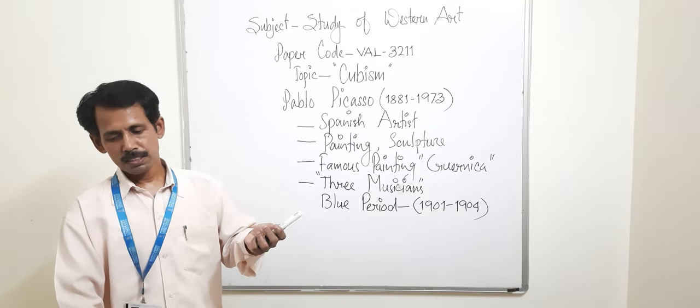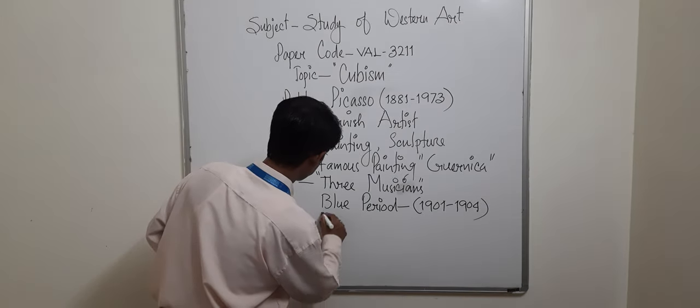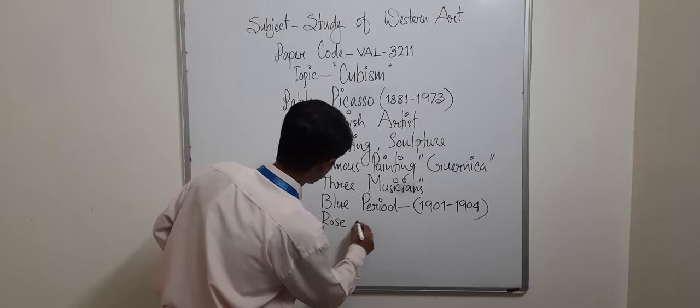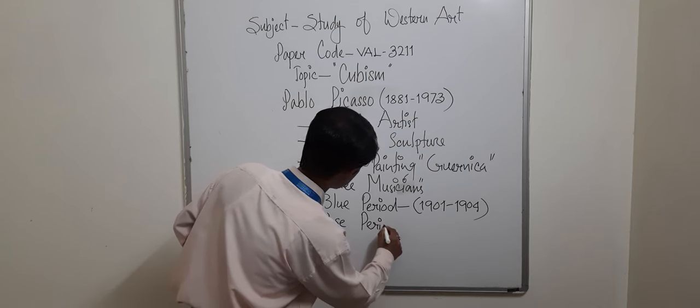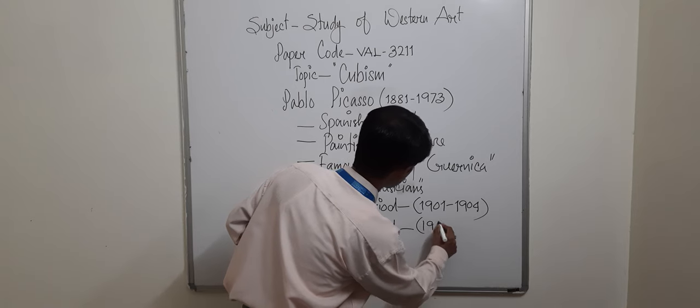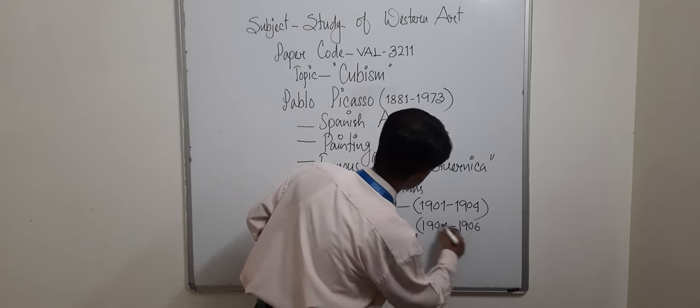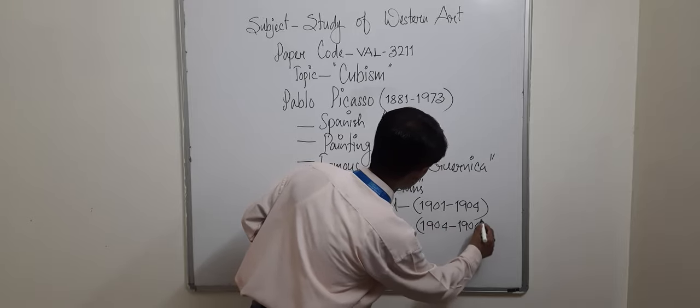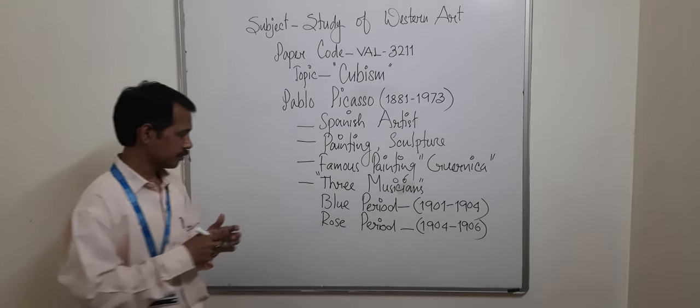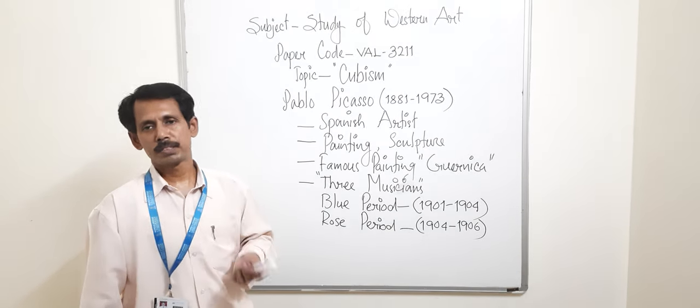Then, another period I'll talk about. That is Rose Period. It was 1904 to 1906. That was Rose Period. During that time, he used red colors. And he made so many paintings.